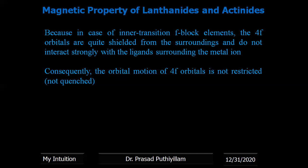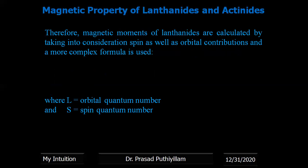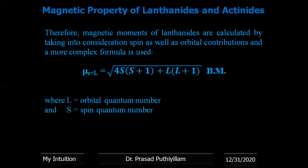Lanthanides are inner transition elements where electron filling takes place in the inner 4f orbitals. These 4f orbitals are shielded from the surrounding ligands by outer orbitals, meaning they are not in direct contact with the ligands. Therefore the orbital motion of 4f electrons is not restricted or quenched, and the orbital contribution must be considered. Hence the paramagnetic moment calculated for these heavy ions does not directly indicate the number of unpaired electrons. The magnetic moments of lanthanides are calculated by taking into account both spin and orbital contributions using the formula μ(S+L) = √(4S(S+1) + L(L+1)) Bohr magnetons, where L is the orbital quantum number and S is the spin quantum number.